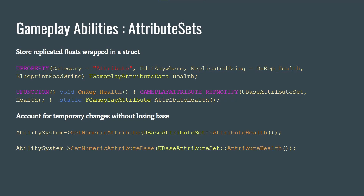The Ability System Component also has Attribute Sets, which store replicated floats wrapped inside a struct. FGameplayAttributeData is a struct that holds information used and passed around throughout the Gameplay Ability System. There's an example of a Health attribute with an OnRep_Health function — that's how the client knows its health has changed. You can account for temporary changes without losing the base value, and you can get or set both the numeric value and the numeric value base.